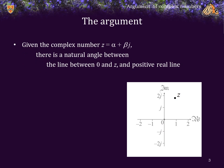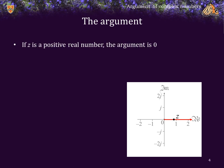Given the complex number z = α + βj, there is a natural angle between the line between 0 and z and the positive real line. This angle θ in the diagram will be denoted as the arg, or argument, of the complex number z, represented as arg(z).